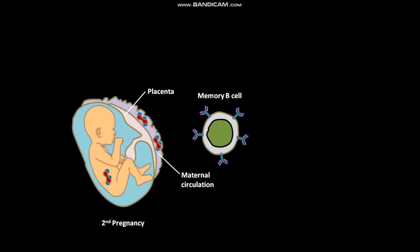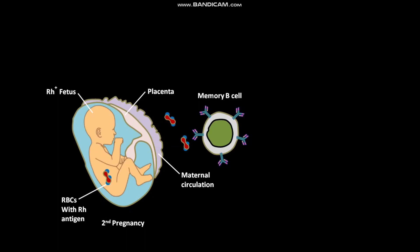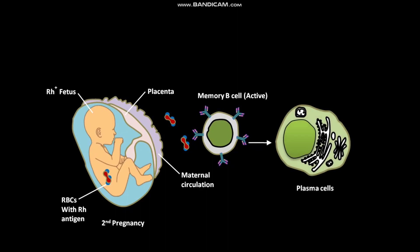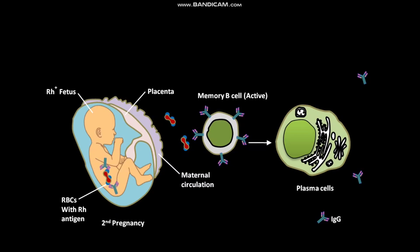During the second pregnancy with an Rh+ fetus, the fetal RBCs with Rh antigen activate the previously formed memory B cells. As a result, memory B cells become active and form plasma cells. These plasma cells then secrete IgG anti-RH antibodies. The IgG anti-RH antibodies then cross the placenta and bind to the Rh antigen expressed on fetal RBCs.